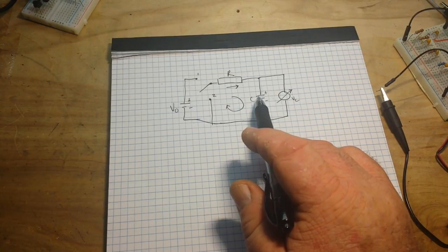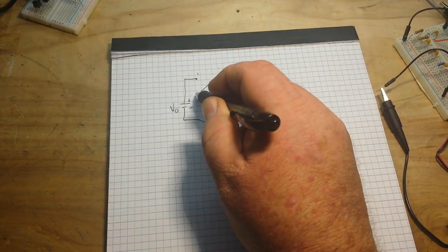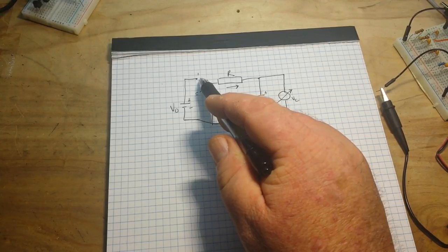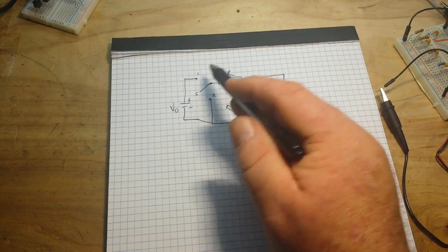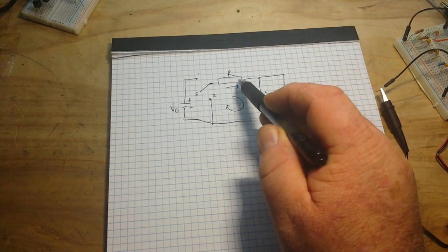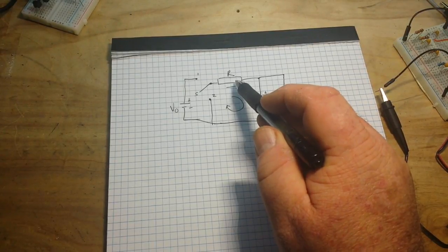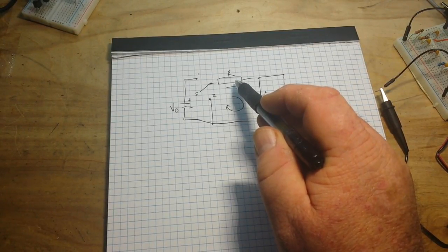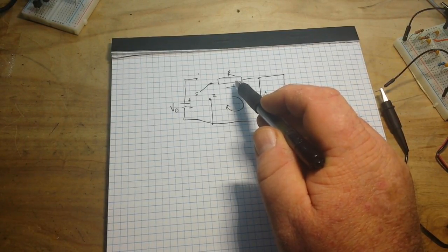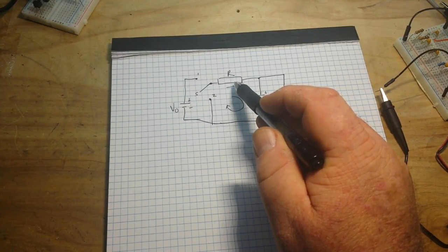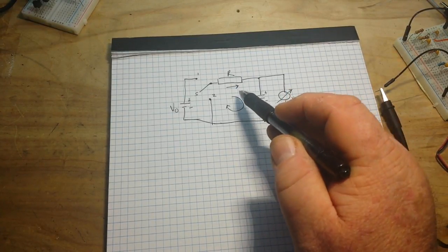Now at time zero, switch S is put into position one and the capacitor charges through resistor R and we can get an expression describing the time dependence of the voltage T and the current at T.